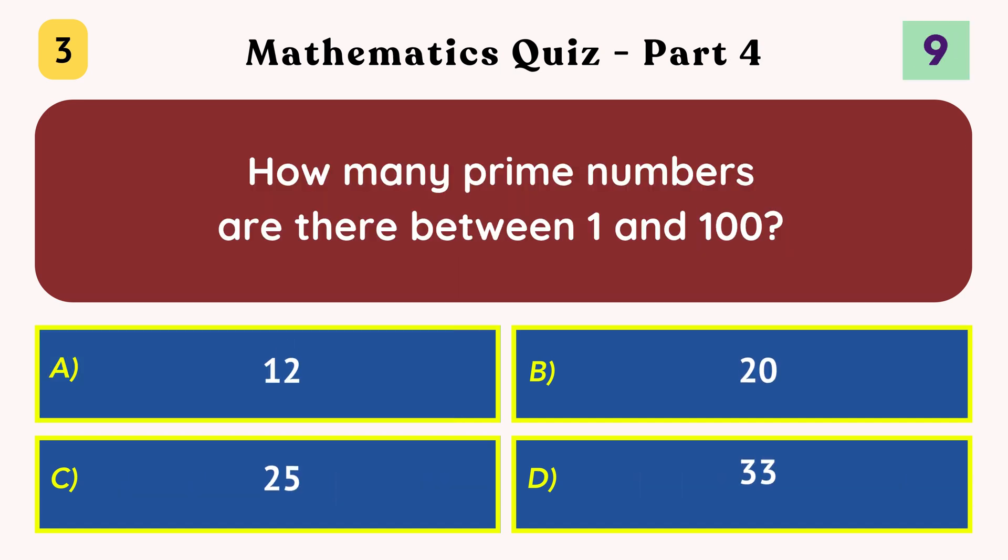How many prime numbers are there between 1 and 100? 25.